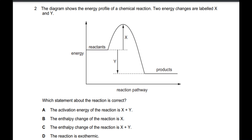In this question the diagram shows the energy profile of a chemical reaction. Two energy changes are labeled X and Y. Before we read the options, let me explain the graph. The barrier of energy from reactant to the peak is labeled as X — that is actually the activation energy which the reactant particles have to overcome to convert into product. Whereas Y, which is the difference of energy between reactant and product, is the enthalpy change which the reaction undergoes by absorbing or releasing heat.